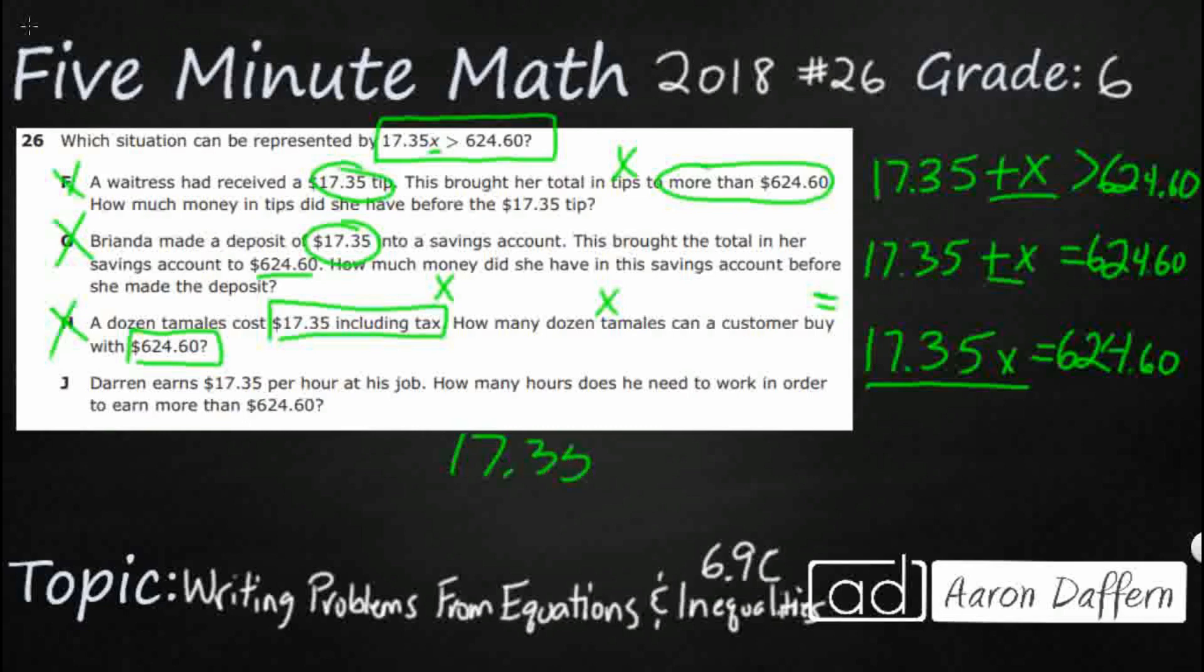What do we have here? 17.35 an hour, per hour here, and you want to earn more than 624.60. So greater than 624.60, and there you have it. That is our answer, J.